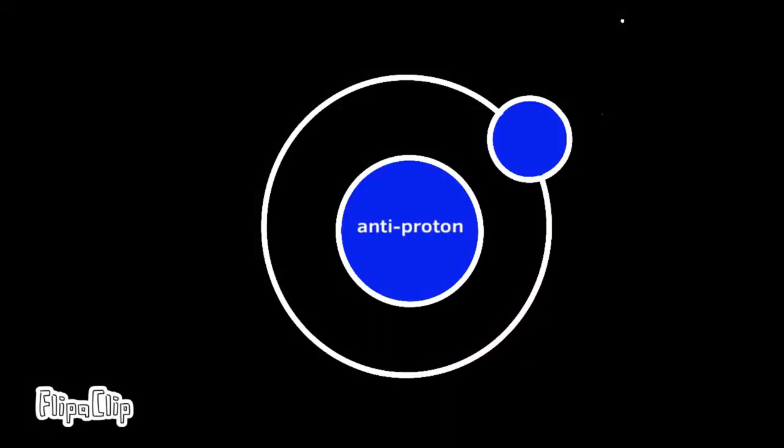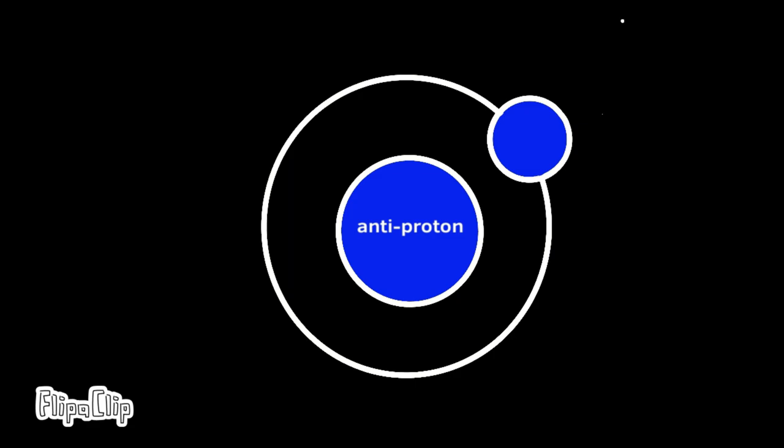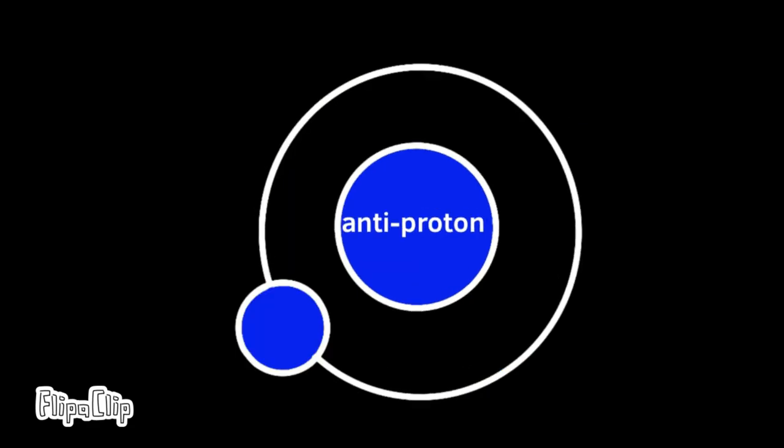But we can also make the really cool positron atom. It's like hydrogen except instead of an electron orbiting a proton, it's an electron orbiting a positron until they annihilate each other in another nanosecond.